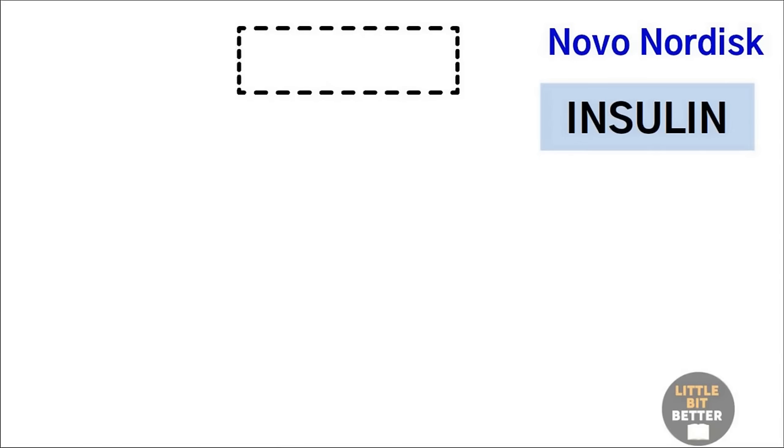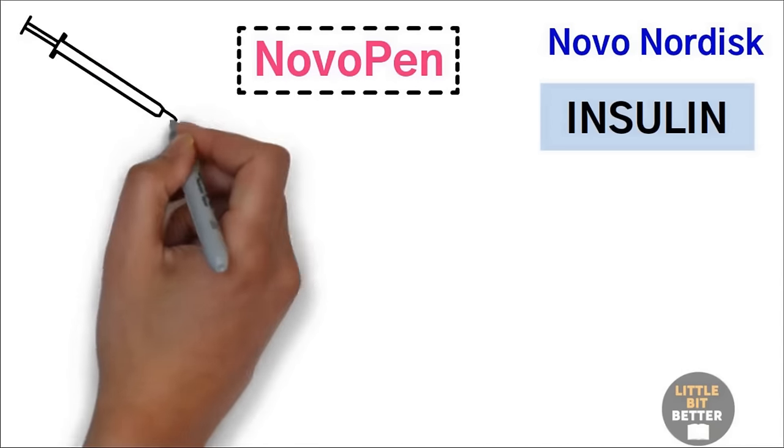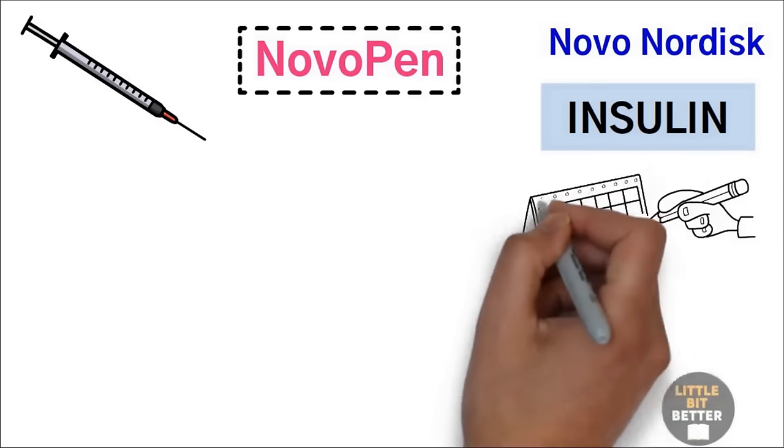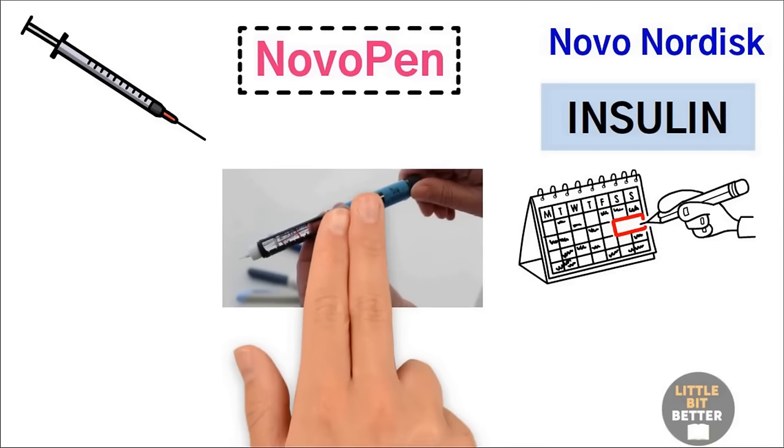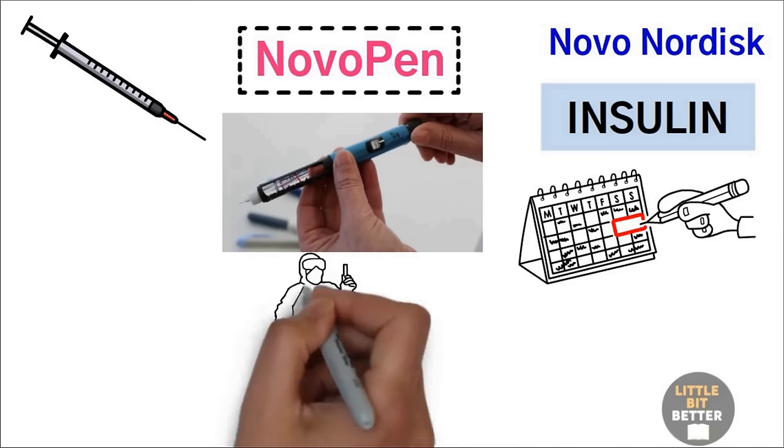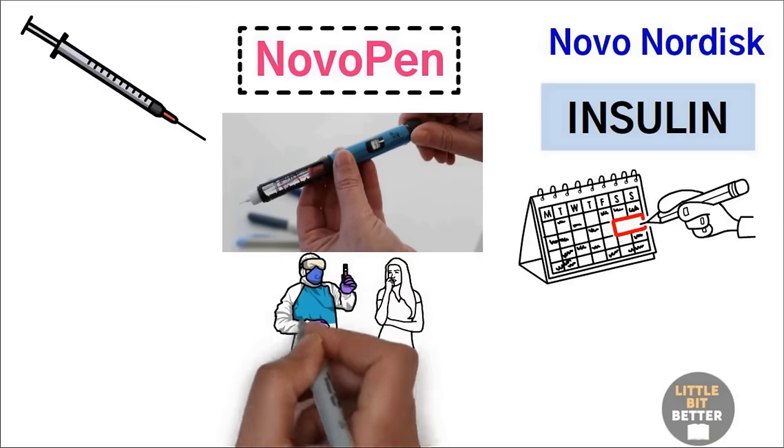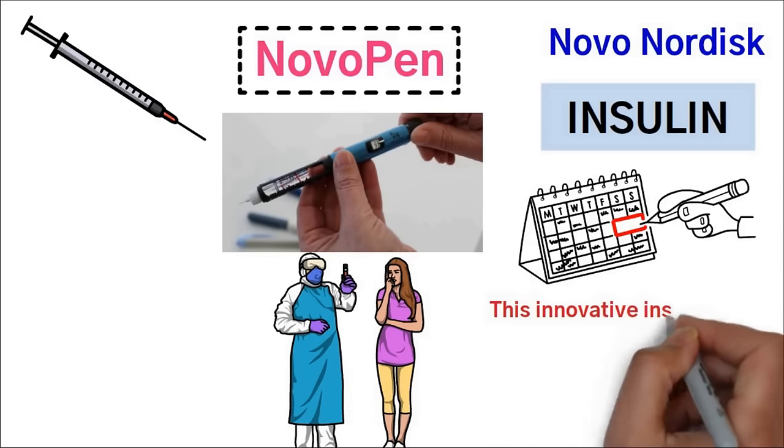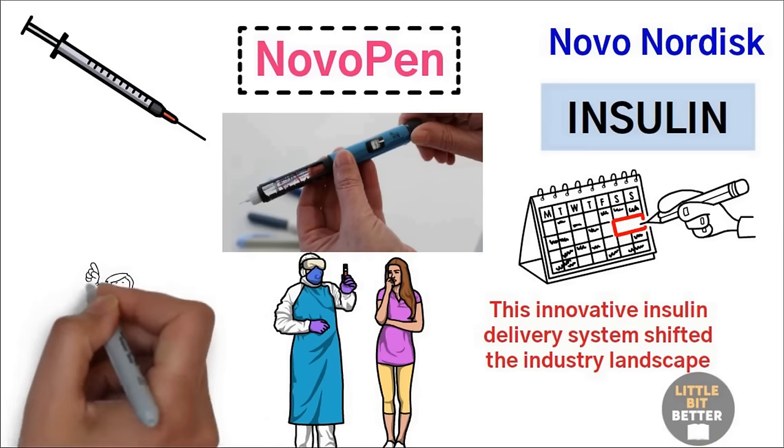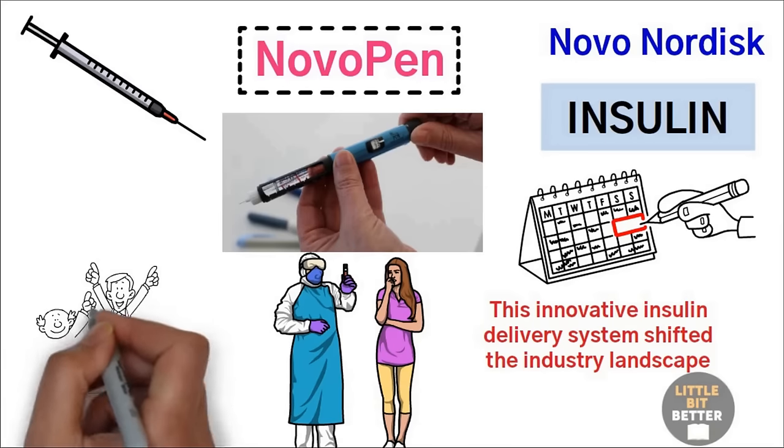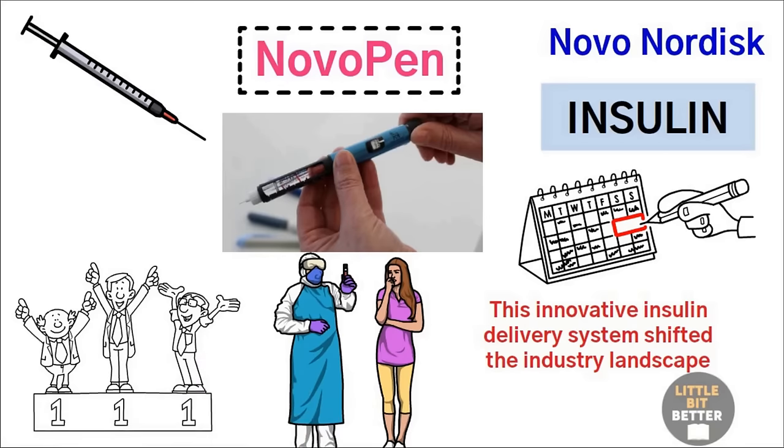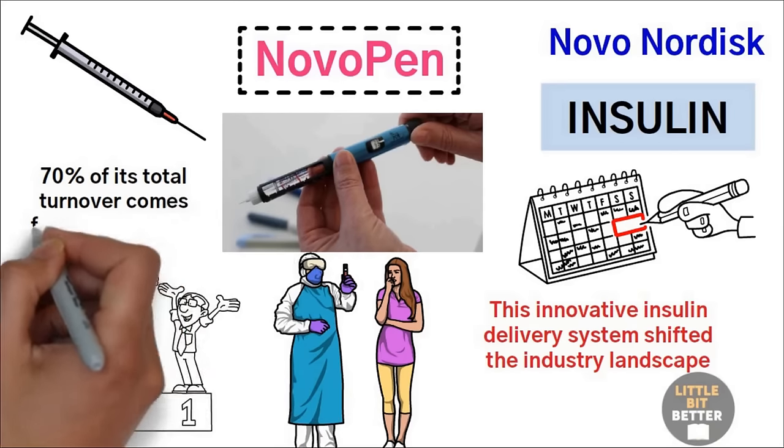This led Novo Nordisk to develop the Novo Pen, the first user-friendly insulin delivery solution that looked like a pen. The pen contained an insulin cartridge that allowed the patient to easily carry roughly a week's worth of insulin. The pen had an integrated click mechanism, making it possible for even blind patients to control the dosing and administer insulin. Patients could take the pen with them and inject insulin with ease and convenience, without the embarrassing complexity of syringes and needles. This innovative insulin delivery system shifted the industry landscape and transformed Novo Nordisk from an insulin producer to a diabetes care company. Today, almost 30 years after its initial blue ocean strategic move, Novo Nordisk remains the global leader in diabetes care, and around 70% of its total turnover comes from this offering.